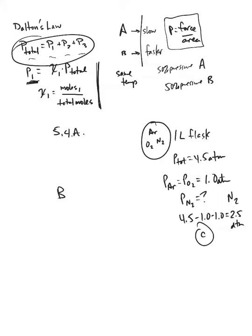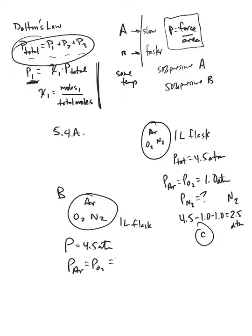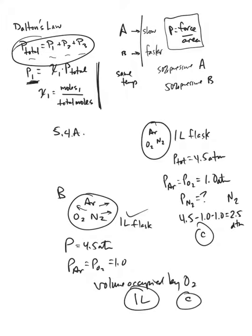For B, I have another 1-liter flask, so I'll just draw a circle here. And I have argon, oxygen, and nitrogen. That sounds familiar. If the pressure is 4.5 atm, and the argon and the oxygen is 1.0, oh, they're throwing you a curveball here. What's the volume occupied by oxygen? Well, this is basically a question about understanding what gases are. Gases fly around wherever they want, so the volume of all the gases is 1 liter. Okay, and that happens to be C, because they told you it's a 1-liter flask.